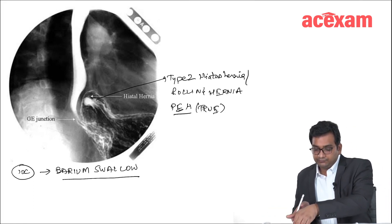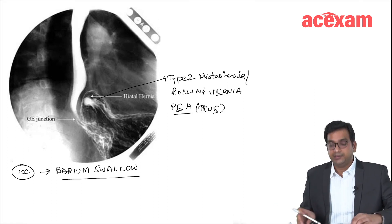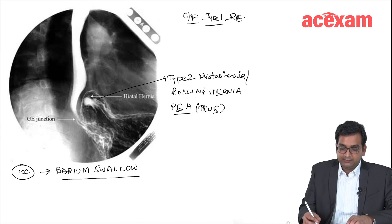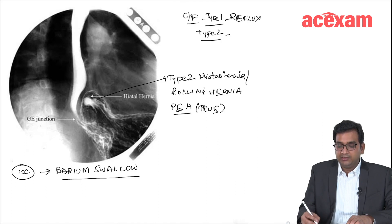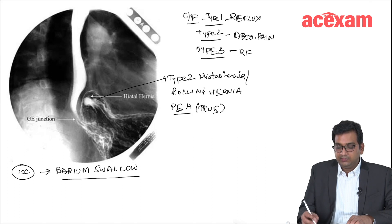What are the clinical features? The clinical features of type 1 are mainly reflux or GERD. Type 2 is mainly abdominal pain. And type 3 is both reflux and abdominal pain.